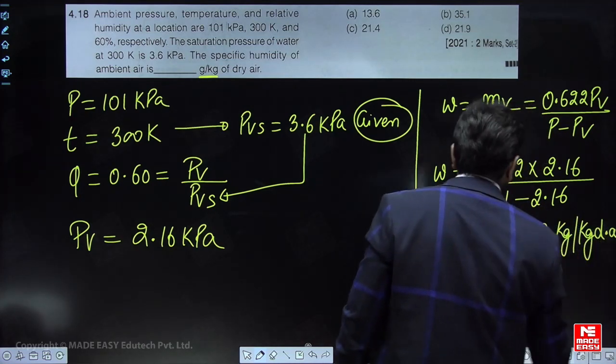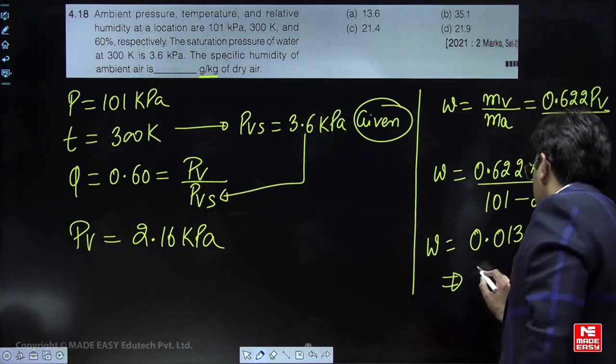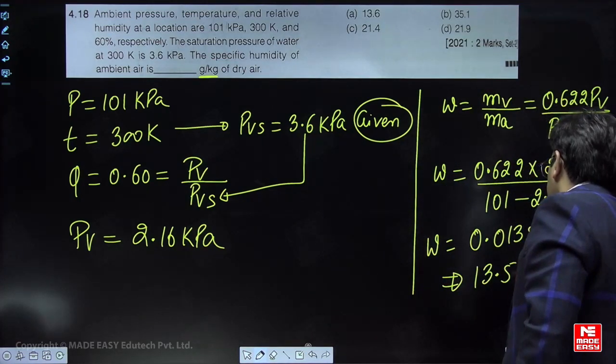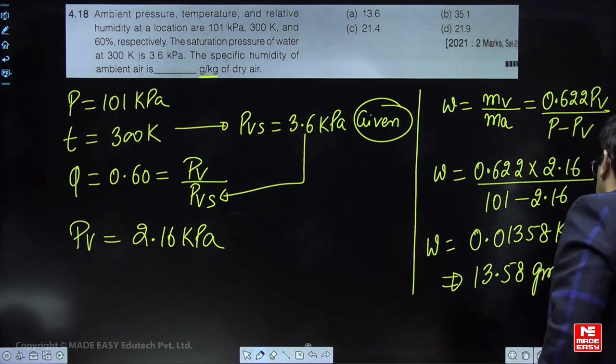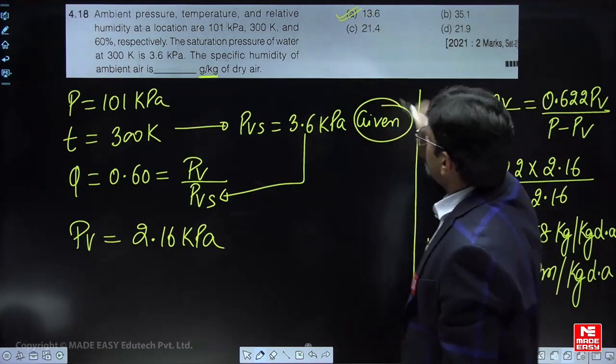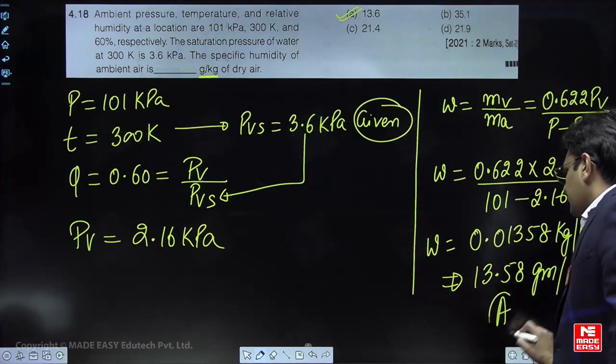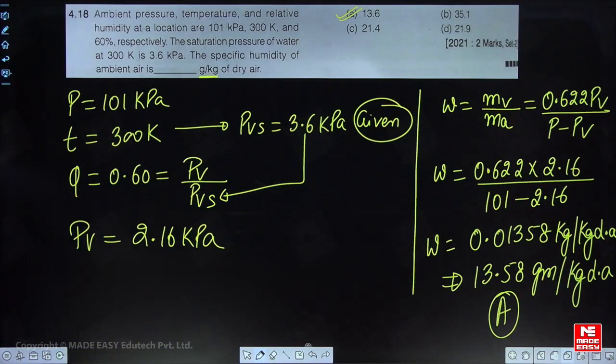From this you will get omega as 0.01358 kg per kg of dry air. So from this you will get approximately 13.58 gram per kg of dry air. The nearest option is option number A, that is 13.6.